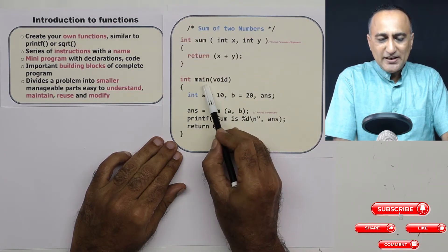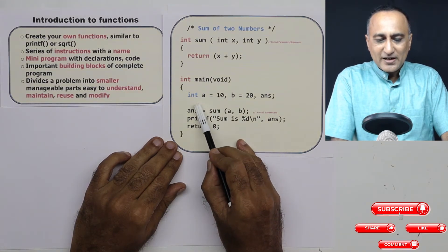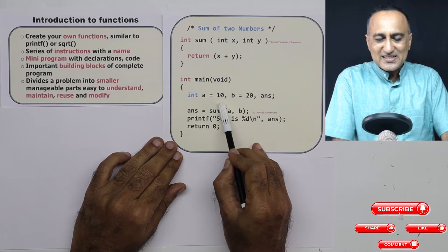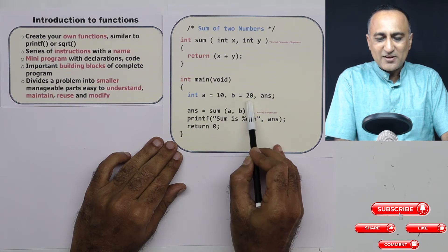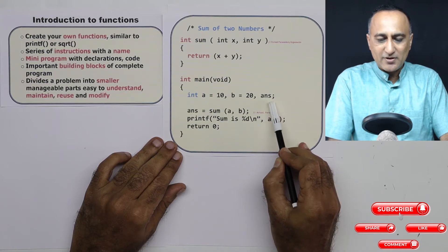It starts with the int main function which we have been using so far. I have declared variables: int a is assigned the value 10, b is assigned the value 20, and the third variable called answer which is not given any value.